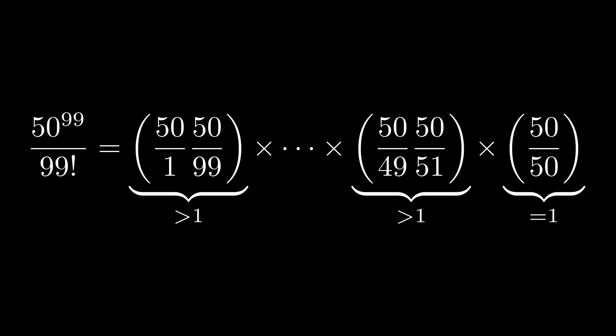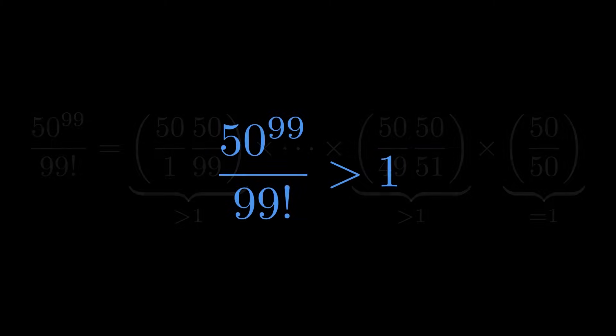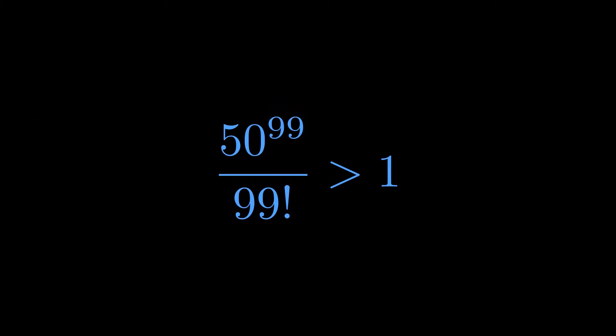And when you multiply a bunch of numbers that are all greater than 1, the result is definitely greater than 1. So this proves that 50 to the 99th over 99 factorial is greater than 1. And to get our final answer, we just multiply both sides by 99 factorial.